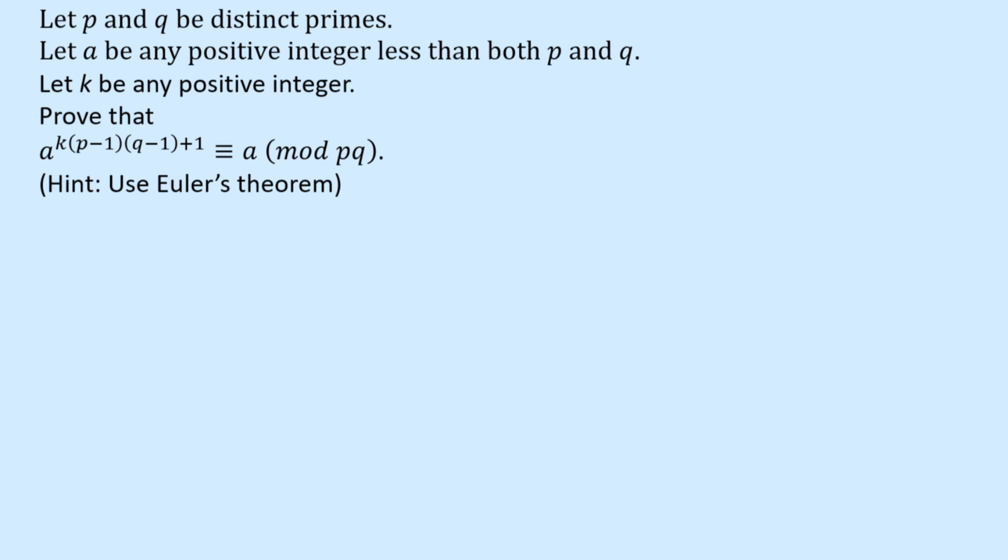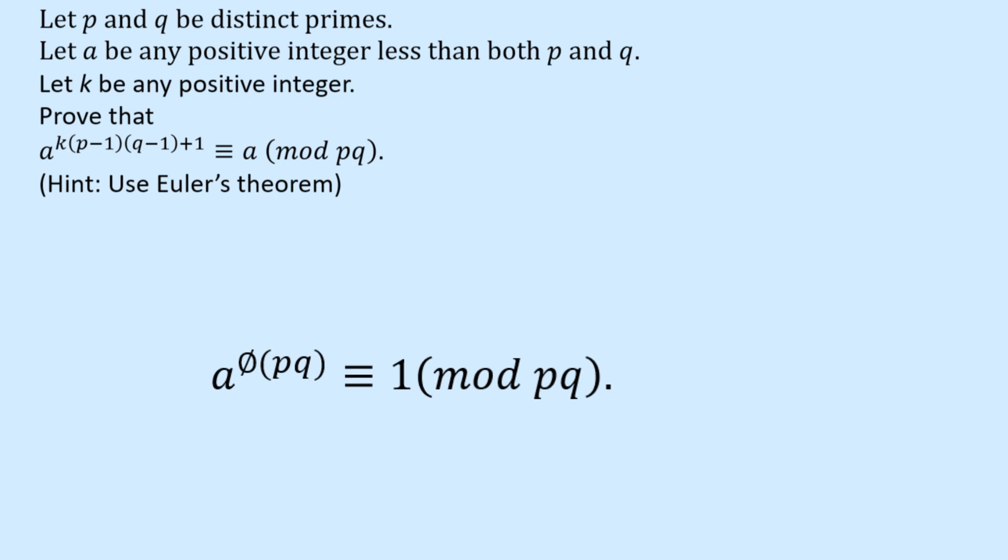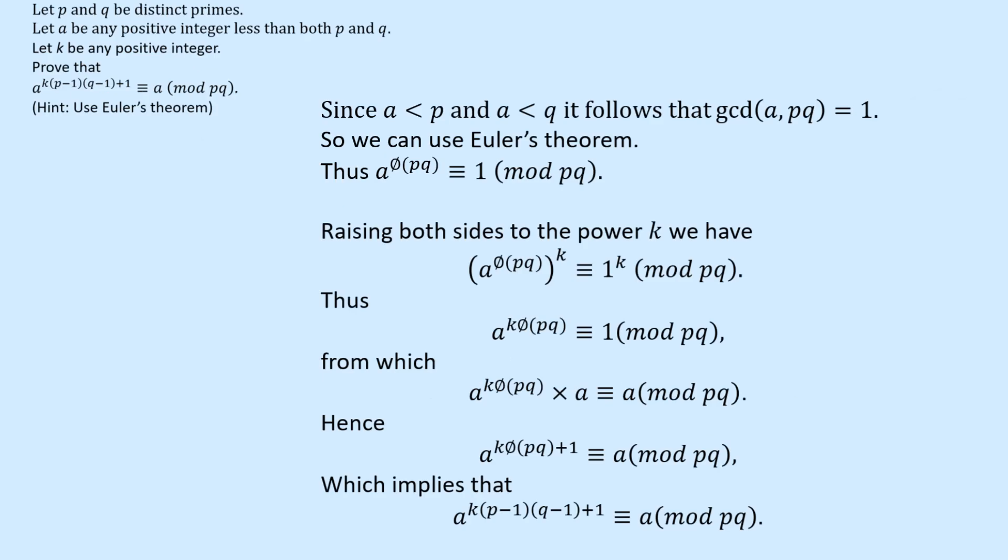If we think about Euler's theorem, the way I've expressed it previously has been modulo N. Here we're dealing modulo P times Q or modulo PQ. So the N is being replaced by PQ. We're going to have phi of PQ or phi of P times Q. Now because A is less than both P and Q, the GCD of A and P times Q must be equal to 1. So we can use Euler, and Euler tells us that A to the power of phi PQ is equivalent to 1 modulo PQ.